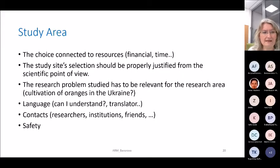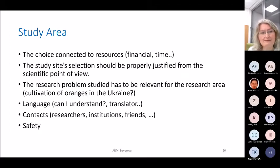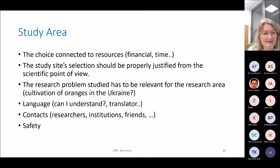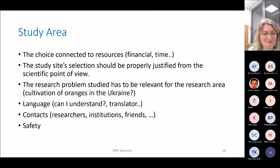How do we choose the study area? Again, the choice is connected to resources. The study site selection should be properly justified from a scientific point of view — the problem we want to investigate should be prevalent in the area. The research problem must be relevant for the research area. For example, we would not conduct research on cultivation of oranges in Ukraine or Bosnia-Herzegovina, because there are no oranges there. If a country has mostly smallholder farmers, we would not research large agro-holdings.